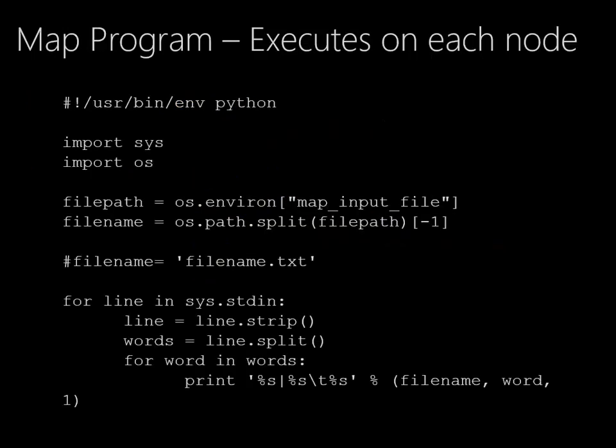What does a map program look like? This is an example written in Python, which is a scripting language that's fairly easy to follow. This isn't the only kind of mapping program — many are in Java and do different things — but this one is fairly simple. What it's doing is reading the file line by line, splitting it up and looking at the words, and then reporting back every word it finds and returning the number one, which will be summarized later.